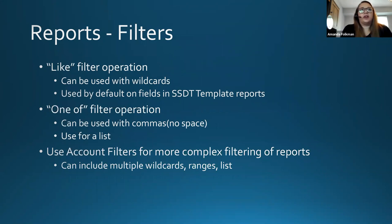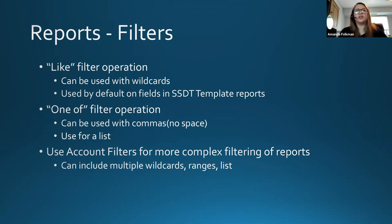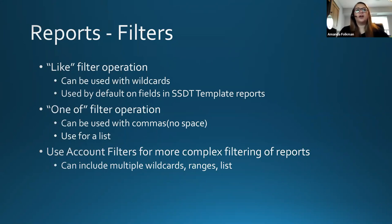The last thing I want to talk about is report filters. This comes up pretty often, specifically with the 'like' filter versus the 'one of' filter, and when to use either one versus using account filters. The like operation can be used with wildcards. The 'one of' operation for filters can be used with commas. Wildcards and commas cannot be used together — there's just not a way. So if you find yourself needing to use a wildcard multiple times with a list of things, that's when you hop to your account filters.